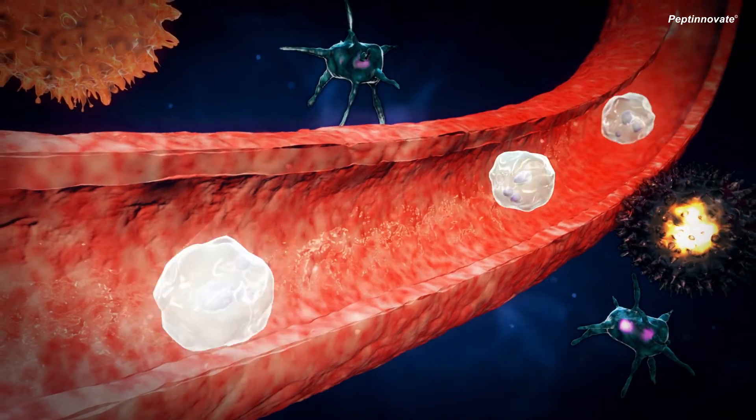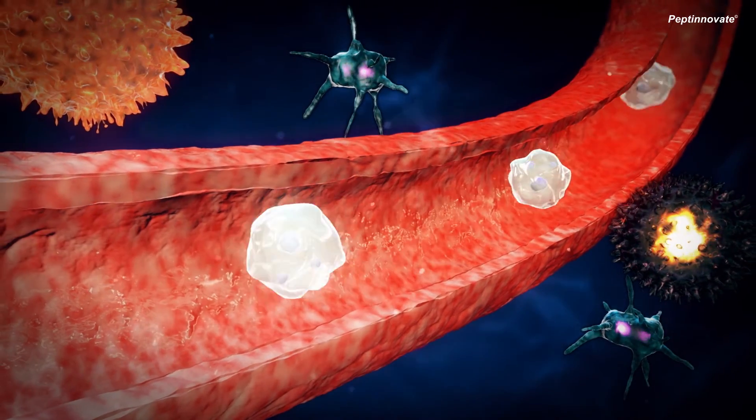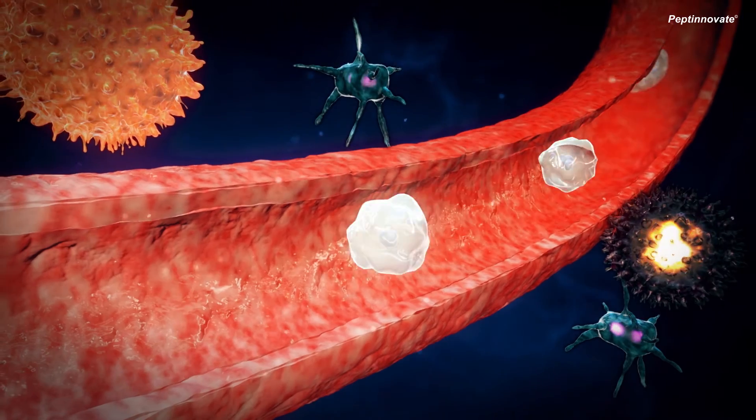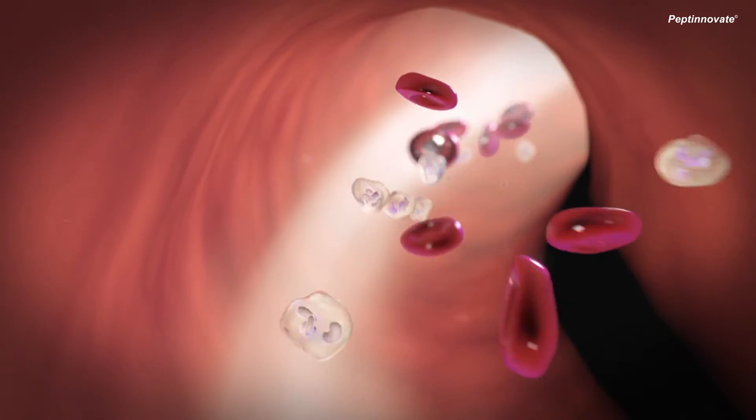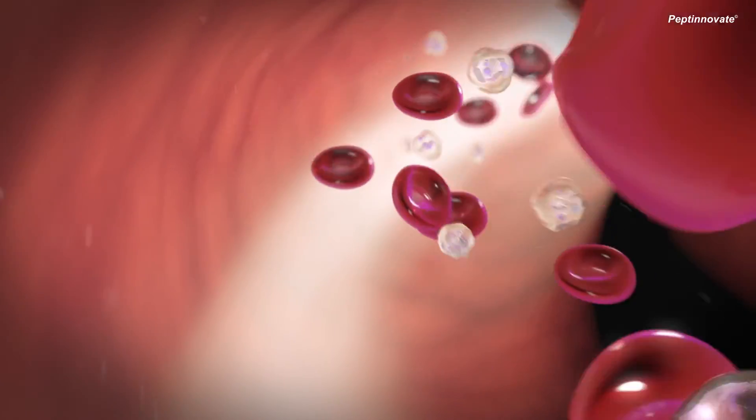The altered signaling process caused by the tuberculosis proteins keeps the white blood cells in the blood vessel and therefore reduces the inflammation in the lung tissue associated with disease.